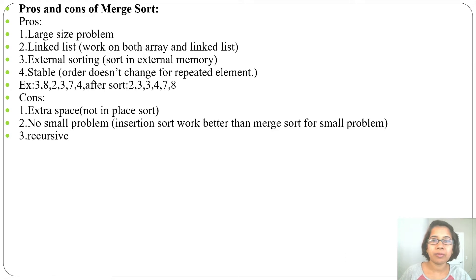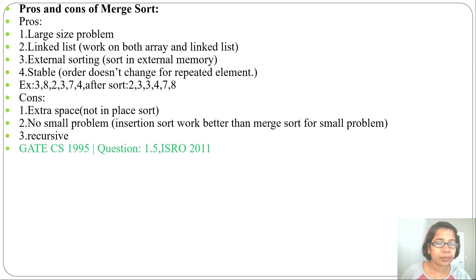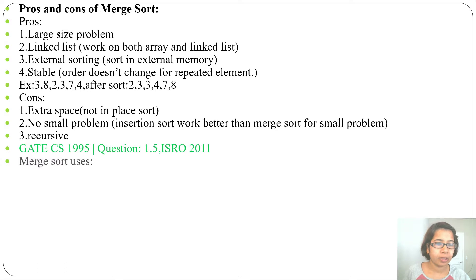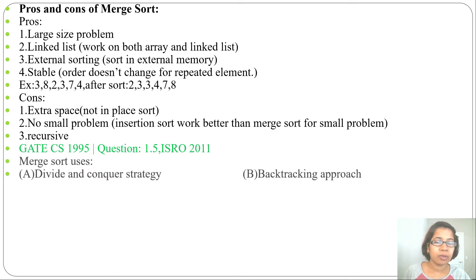Here I will solve some questions which are before 2010. First question: it was asked in GATE CS 1995 and also in ISRO 2021. Merge sort uses — and four algorithm design techniques are given: divide and conquer strategy, backtracking approach, heuristic search, and greedy approach.